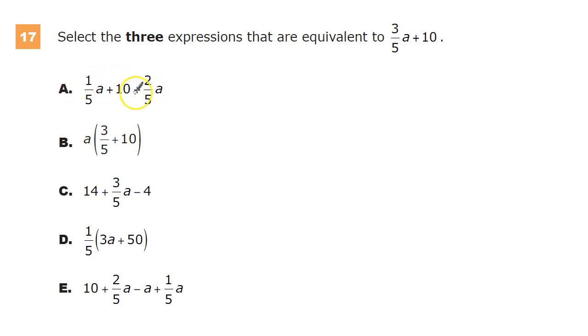For choice A, the only relationship between the three components here would be that they're being added together. So this is just combined like terms. If I have anything with an a, I put one line underneath it and I usually actually put my constant terms, which are the numbers, in like a little Dorito shape. So I need to combine anything that's alike. Well, three a plus, or one-fifth a plus two-fifths a, one plus two is three, and they both have the same denominator. So that looks like three-fifths a plus 10. So there's one of my answer choices right there. A is a choice.